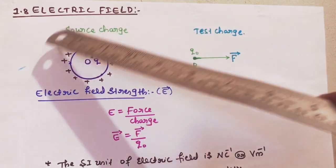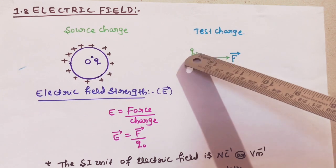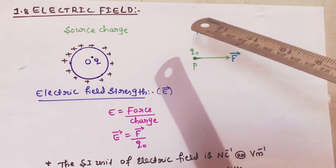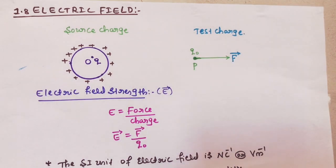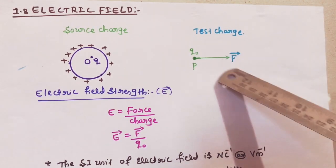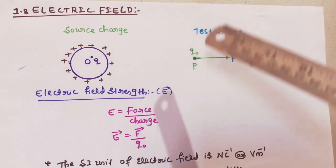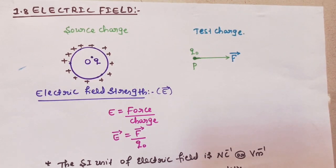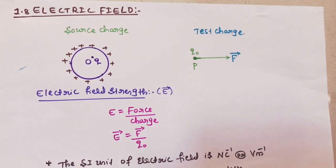To test the existence of an electric field at any point P, we simply place a small positive charge q₀, called the test charge, at point P. If a force F is exerted on the test charge at that point, then only we say that the electric field E exists at point P. The charge Q is called the source charge as it produces the electric field E.